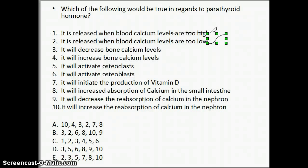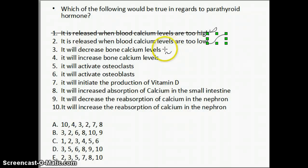The next two options have to do with bone calcium levels. If blood calcium levels are low, the major storage of calcium in the body is in our bones. The easiest way to increase blood calcium levels is to take it from our bones. So when parathyroid hormone is released, it will decrease bone calcium levels because it's putting that calcium from the bone into the blood. So option four would be the incorrect response.